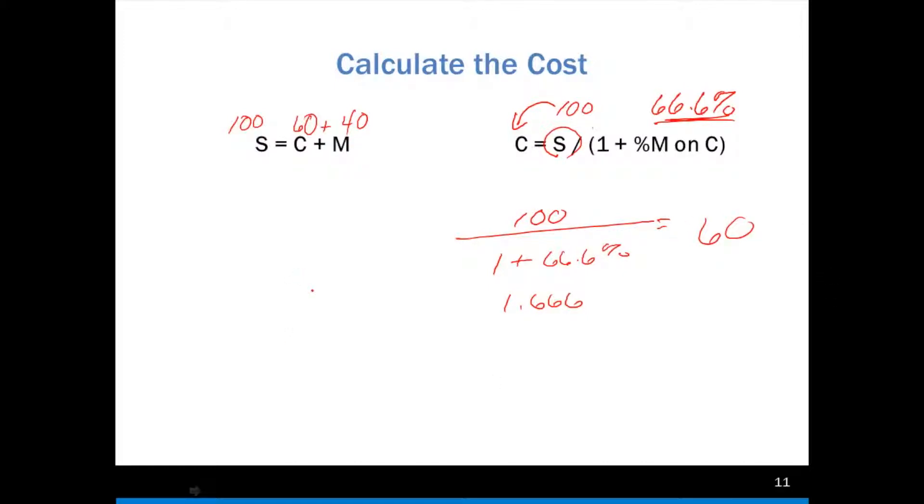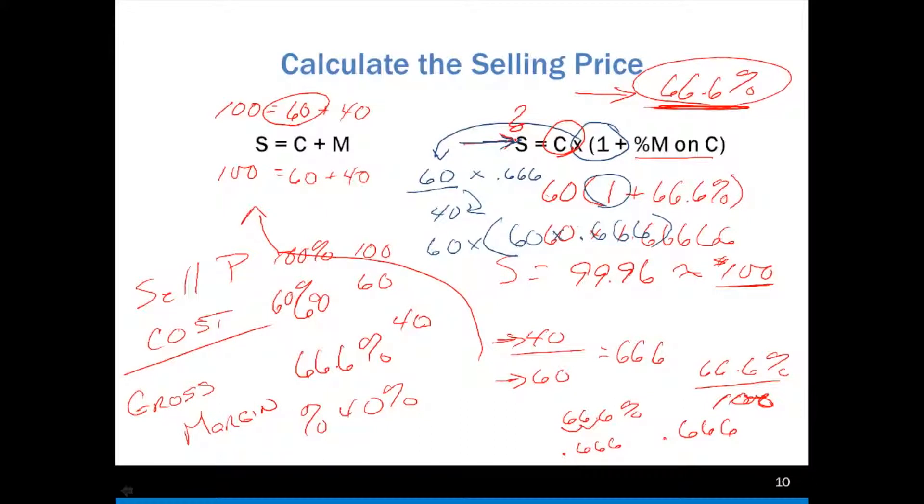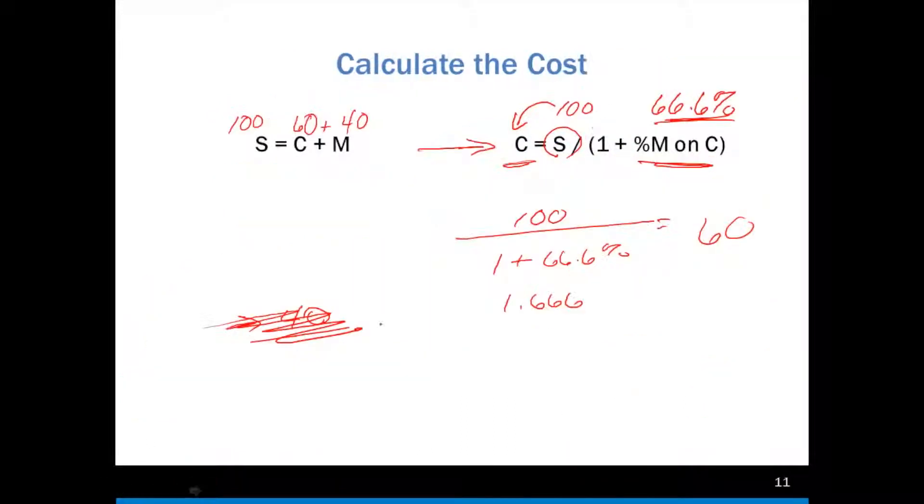We knew our selling price is 100. We were given this percentage. We're able to calculate our cost of 60, and then we can work back and figure out that our margin is 40. And again, if we were given the dollar markup, 40, to begin with, which allowed us to figure out the percent margin on cost, we wouldn't have needed to use this formula, because we were given the dollar markup. But that isn't the case. The case is, we're told, our selling price is 100, and our percent markup is 66.6, and that allows us to calculate out the cost, plug it in, and figure out the markup itself.